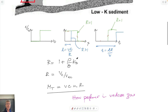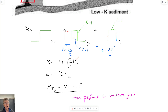We saw last time that we can get estimates of Kd for solvents in two different ways: from octanol-water partition coefficients for those solvents, or from their solubilities. These must be related in some way, and that can define Kd for us if we want.